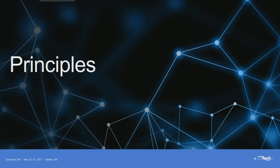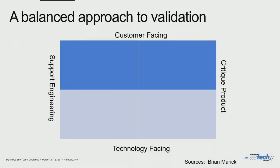Before the AX7 timeframe I was primarily working on more of the platform and tooling side of the Dynamics development efforts. The last few years I've been on the app side, which I think has been beneficial to really drive these principles into the organization. The first thing I want to talk about is a balanced approach to validation — and this isn't specifically about automation, it's really about validation in general.